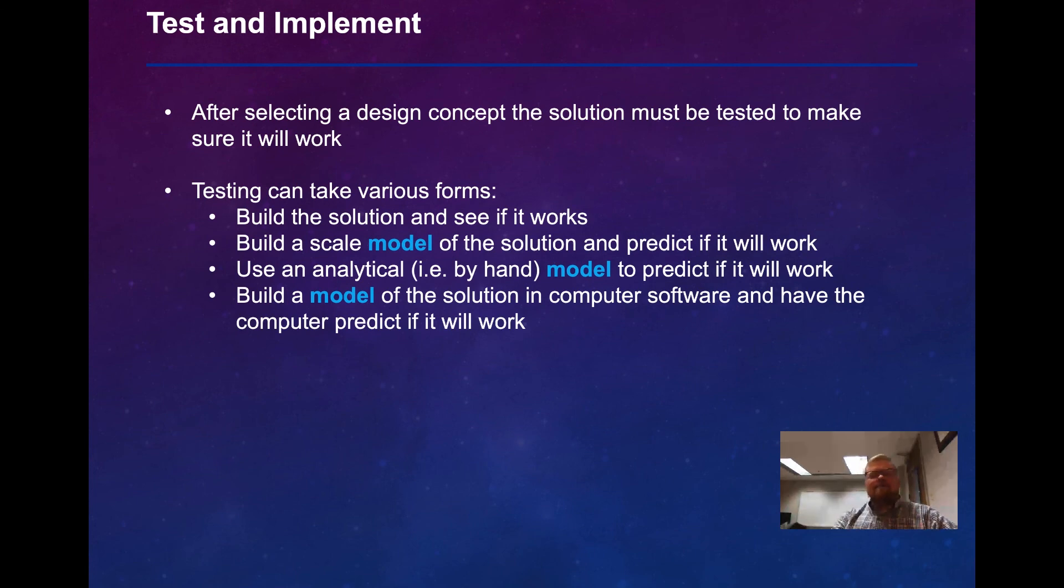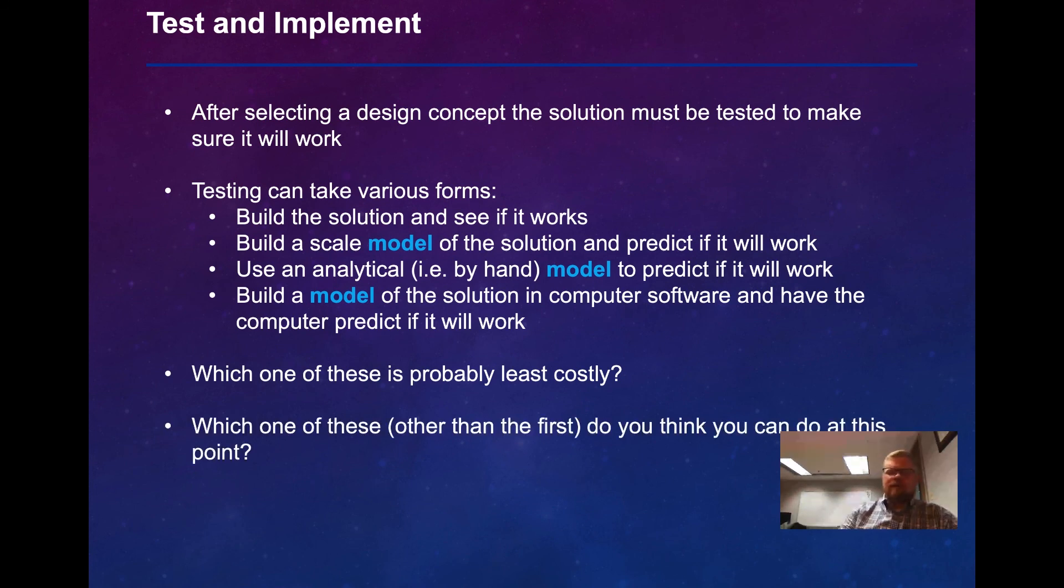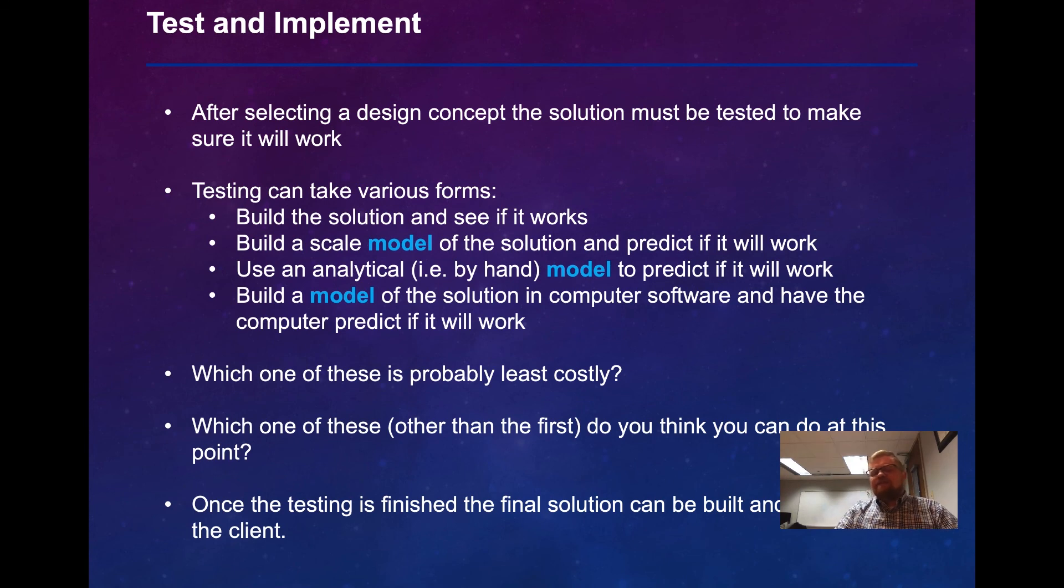And that is one of the most common things that happens. So, as a new engineering student or a person that is new to the concept of engineering, which one of these do you think is probably the least costly? Well, if I look at it, using an analytical model to predict if it will work, it just requires a pen and paper. And so that is obviously the cheapest first approximation of whether or not a solution will work. Once the testing is finished, the final solution can be built and delivered to the client.